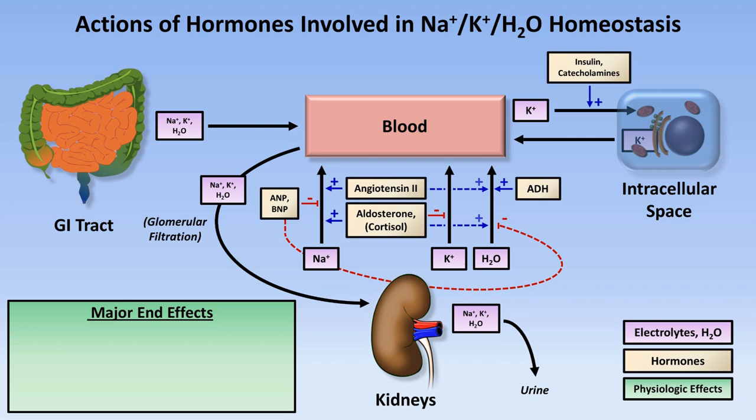Angiotensin-2 promotes increased intravascular volume and thus increased blood pressure. Aldosterone also promotes increased intravascular volume and blood pressure, as well as decreasing serum potassium.